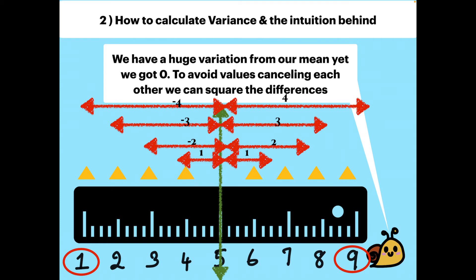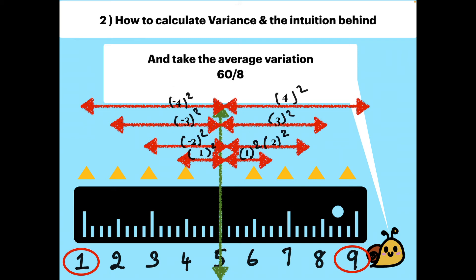To avoid values canceling each other, we can square the differences and take the average variation. That is adding all these values up gives us 60 and dividing it by the total count is 8, gives us 7.5, which is our variance.